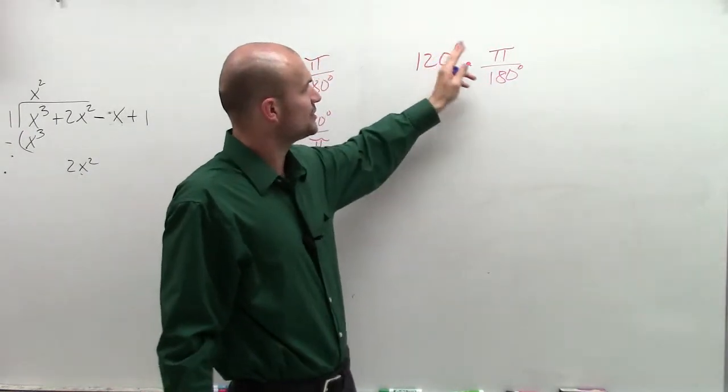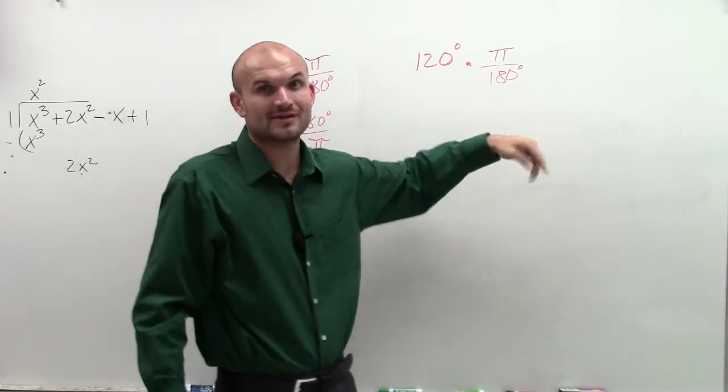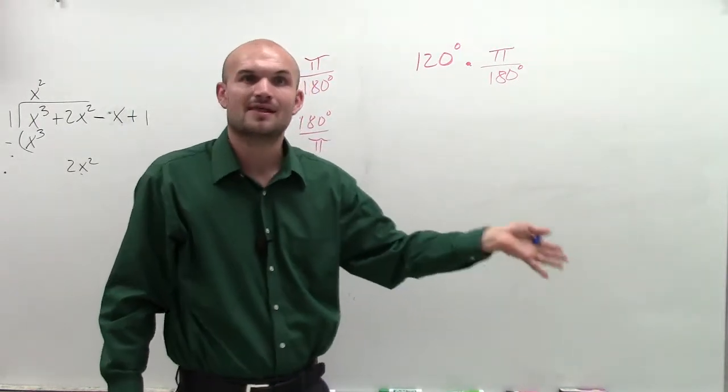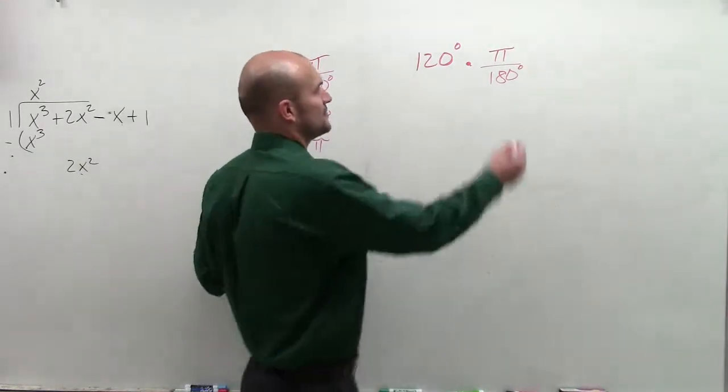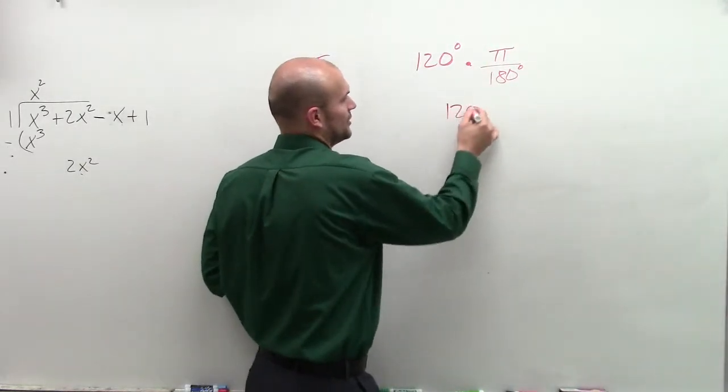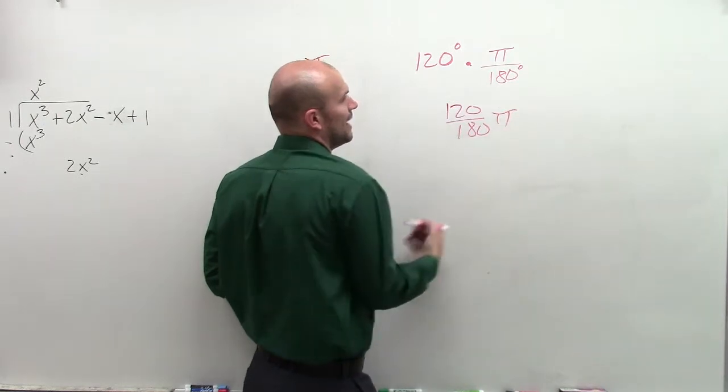But notice when I multiply my degrees and divide by my degrees, I'm going to cancel out my degrees. So therefore, I'm just going to be left with 120 over 180 pi.